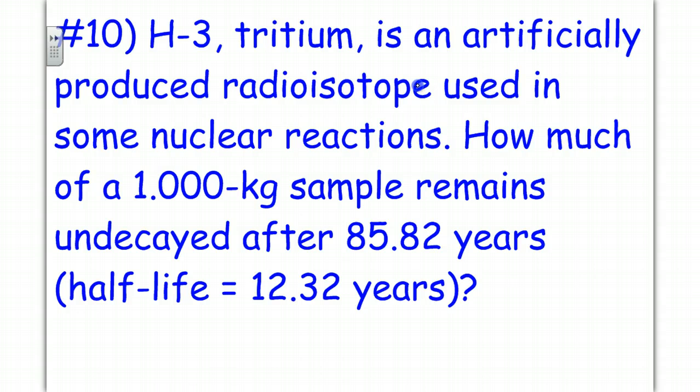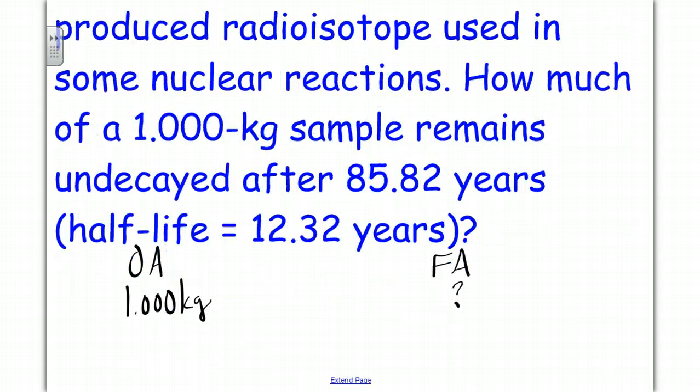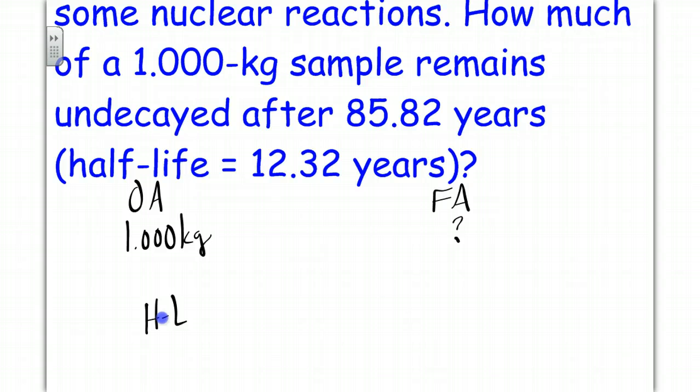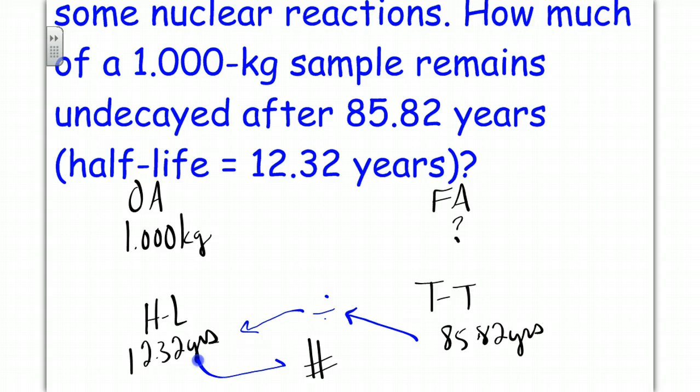H-3 tritium is an artificially produced radioisotope using some nuclear reactions. How much of a 1 kilogram sample, so that's my original amount, remains undecayed, so I don't know my final amount, after 85.82 years has elapsed, and we have a half-life of 12.32 years. And so what I don't know at the moment is how many half-lives have occurred. I cannot use the amounts this time because I don't know my final amount. So we're going to use the times.